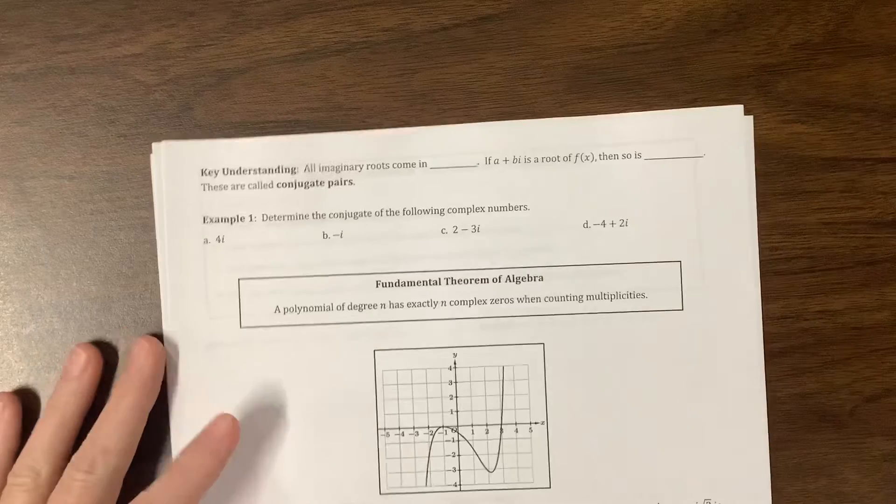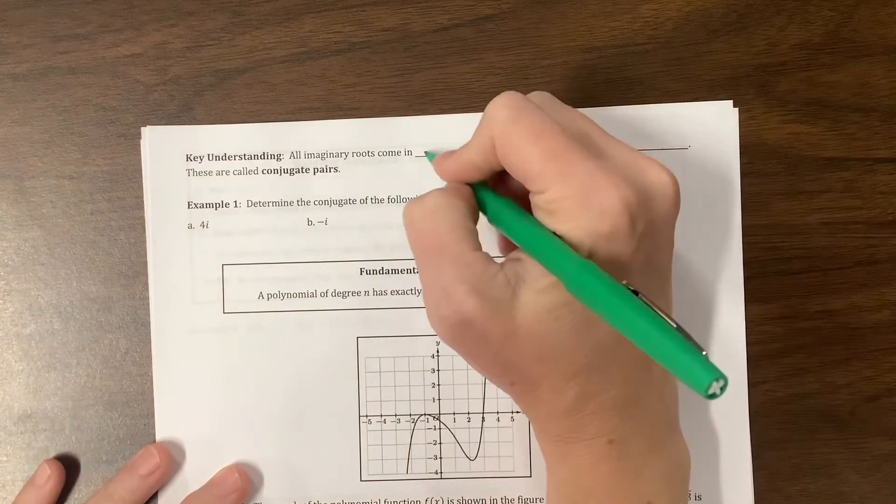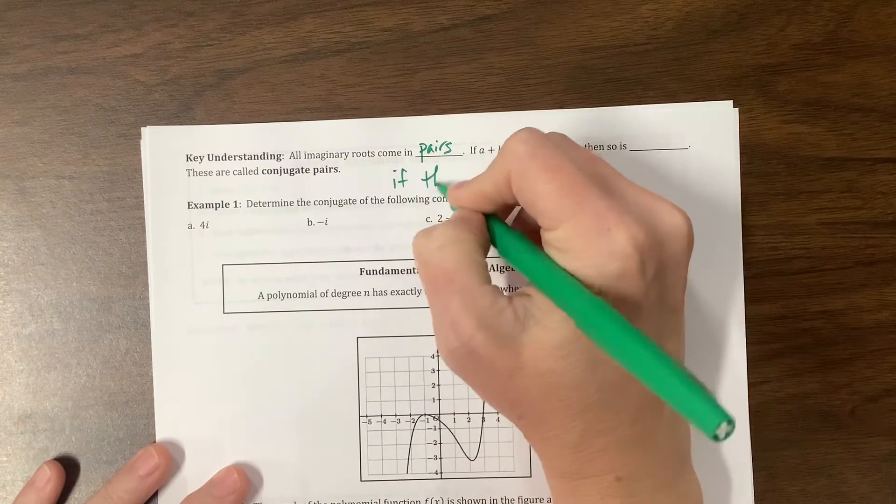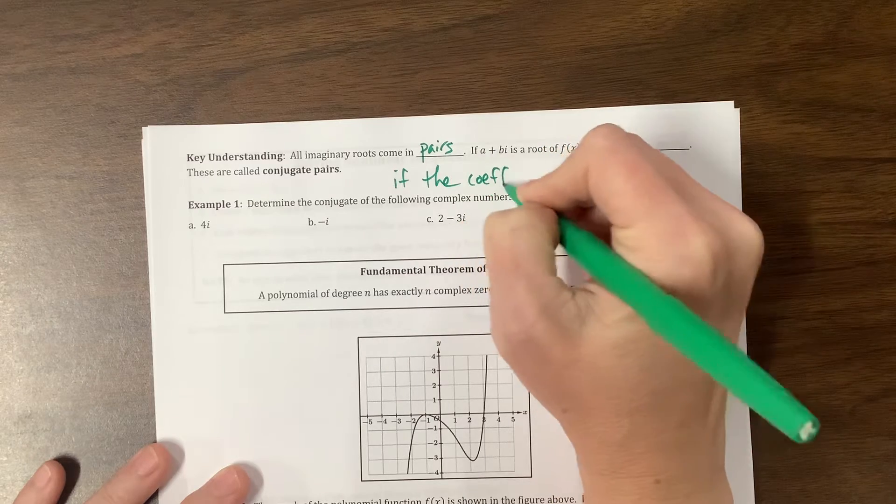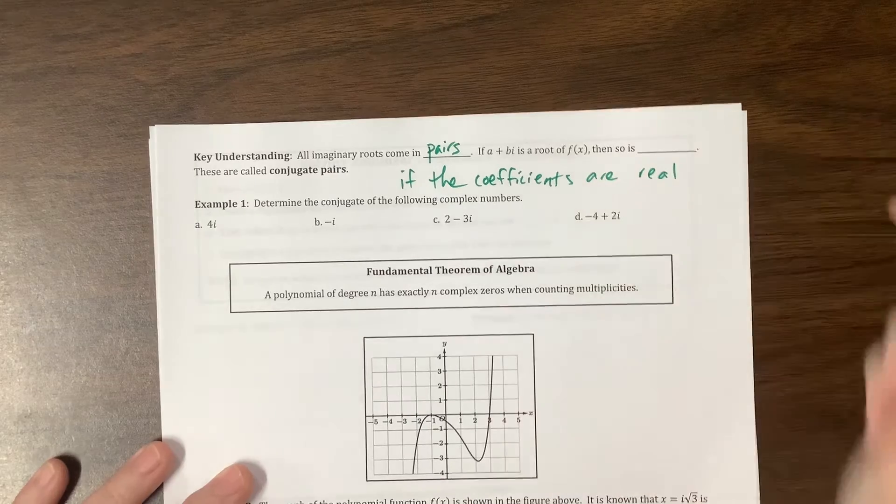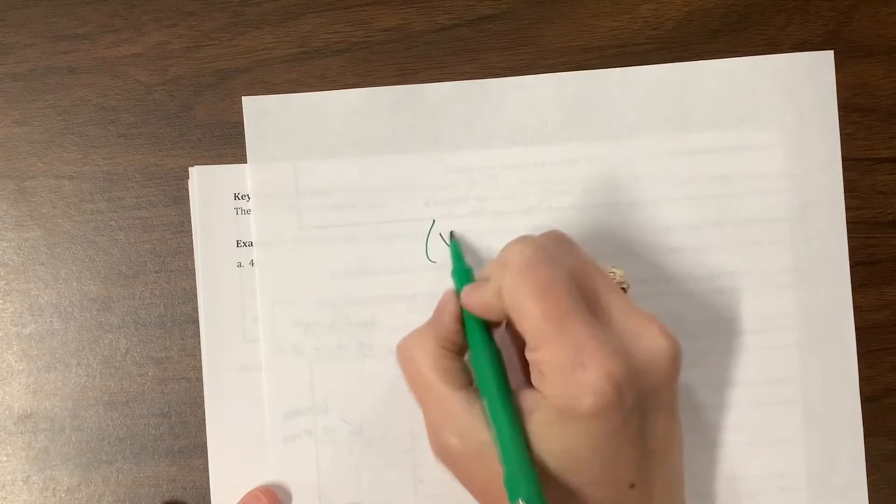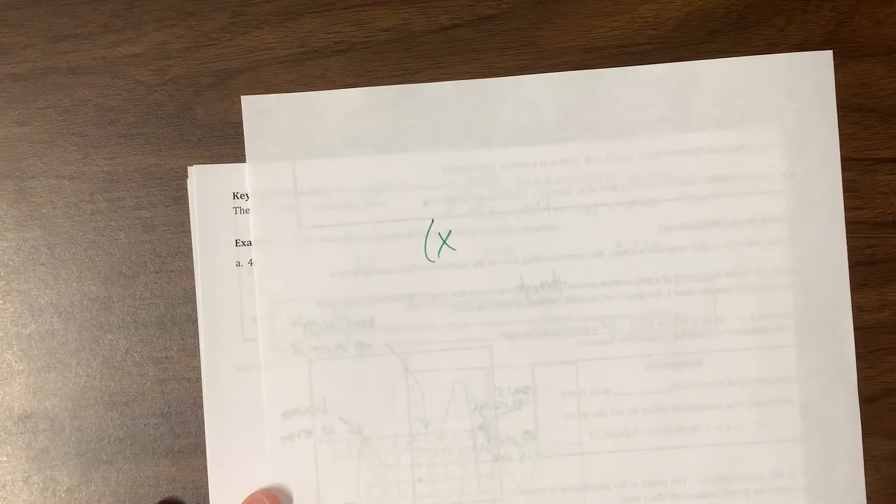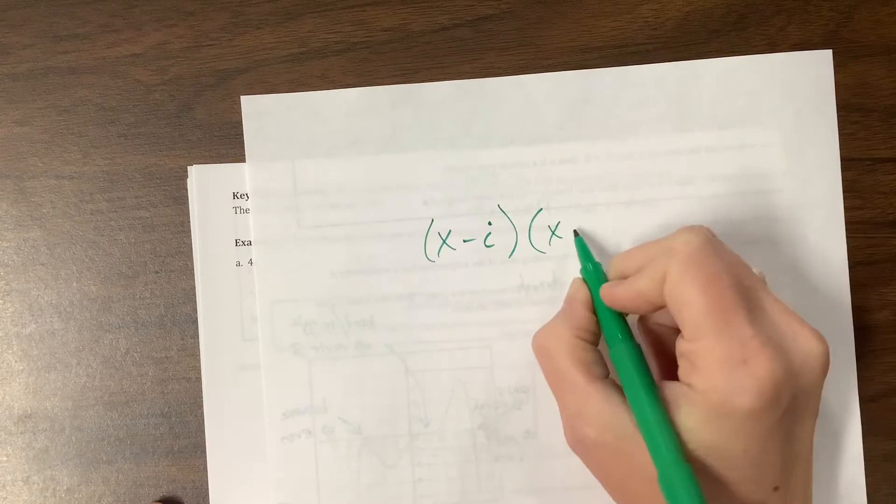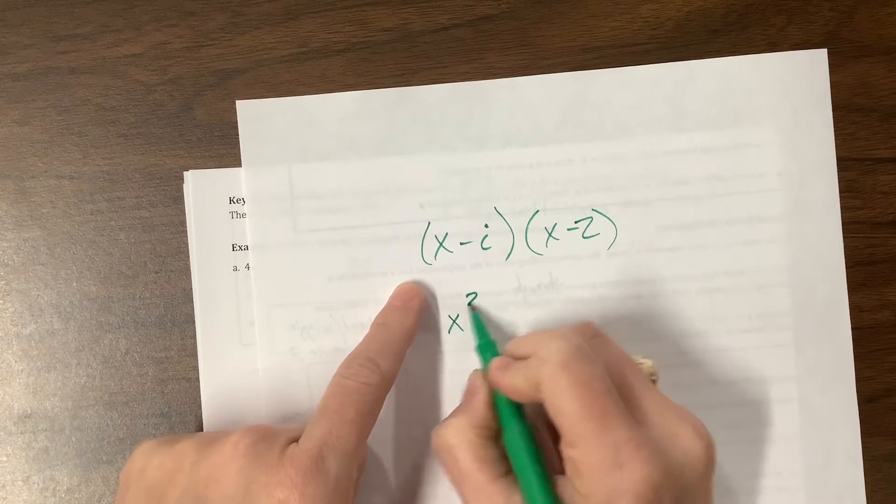So there's a little tweak that I would do to these notes, and that is, it says all imaginary roots come in pairs if the coefficients are real. Let me explain what I'm talking about. If I had a polynomial, say I have a root of i, so then x minus i is a factor, and I have a root of 2. I could have x minus 2.